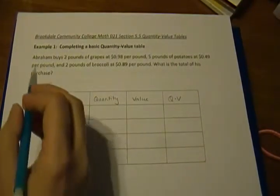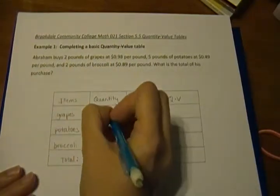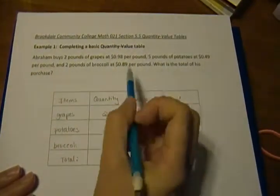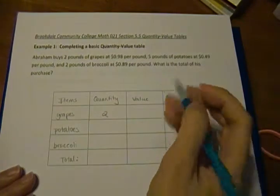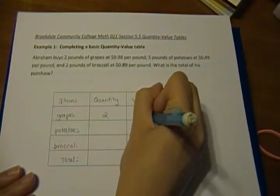So for our grapes, it says that we have two pounds, so our quantity is two, and our value is the ninety-eight cents per pound, so our value is 0.98.